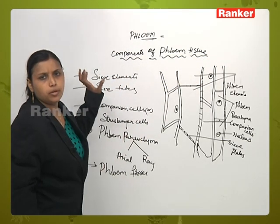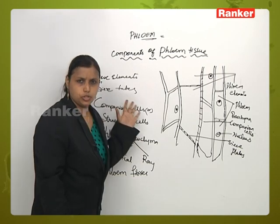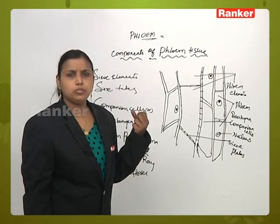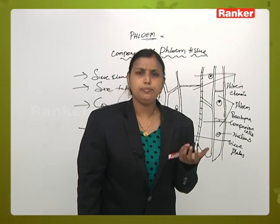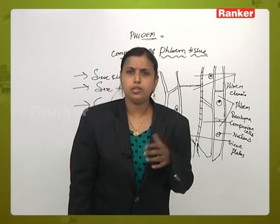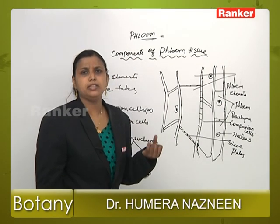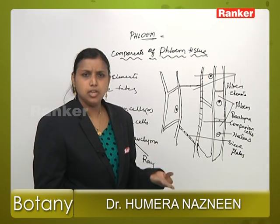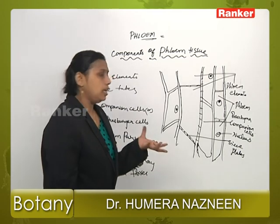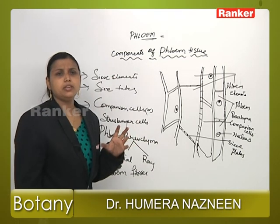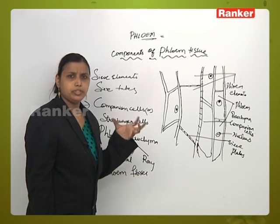Now we are supposed to study about the components of the phloem tissue — what elements the phloem tissue is made up of. In an earlier class, we studied about xylem: xylem tracheids, vessels, xylem parenchyma, xylem fibers, and all that. In the similar way, you have phloem tissue, which is also made up of different components.